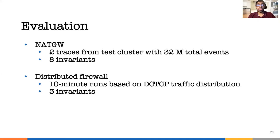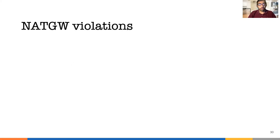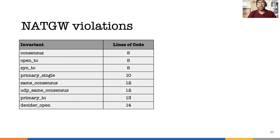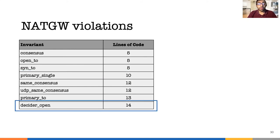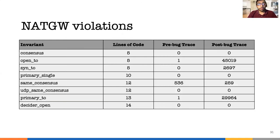Now let's go into the details for the evaluation of each network function. For the NatGateway, there are eight invariants. Primary single is the example invariant I gave earlier; the detailed description of each invariant is in the paper. As you can see, we need less than 15 lines to specify each invariant violation. In the NatGateway traces, we were able to find many violations.